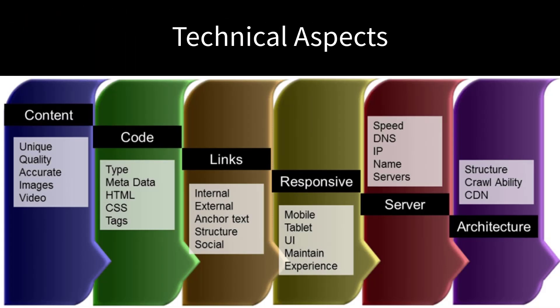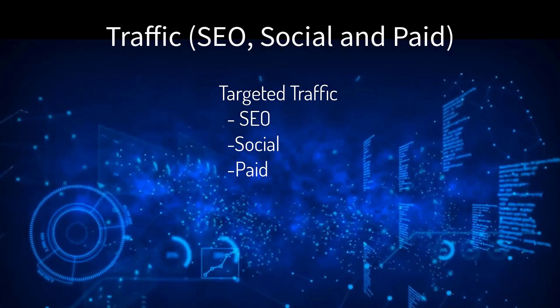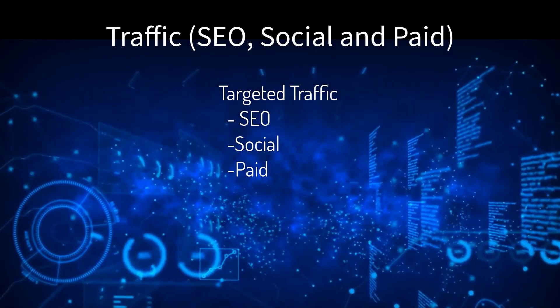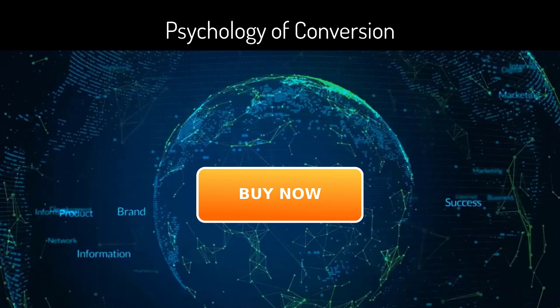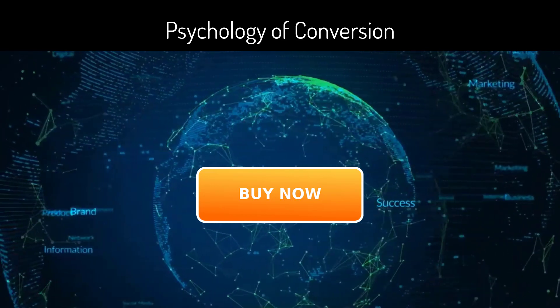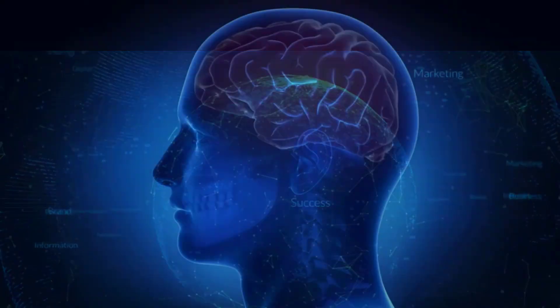Of course, all online marketing must have three elements in alignment: the technical aspects — servers, layout, code structure; the traffic — SEO, social, and paid; and the psychology of conversions.